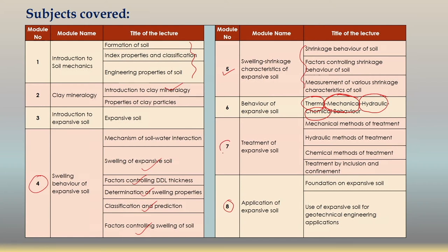In the seventh module, I discussed how to treat expansive soil when we encounter it in the field. I discussed briefly the different methods related with mechanical treatment, hydraulic treatment, chemical treatment, and treatment by inclusion and confinement. Since all these methods are very extensive and each is a subject by itself, I discussed them briefly.